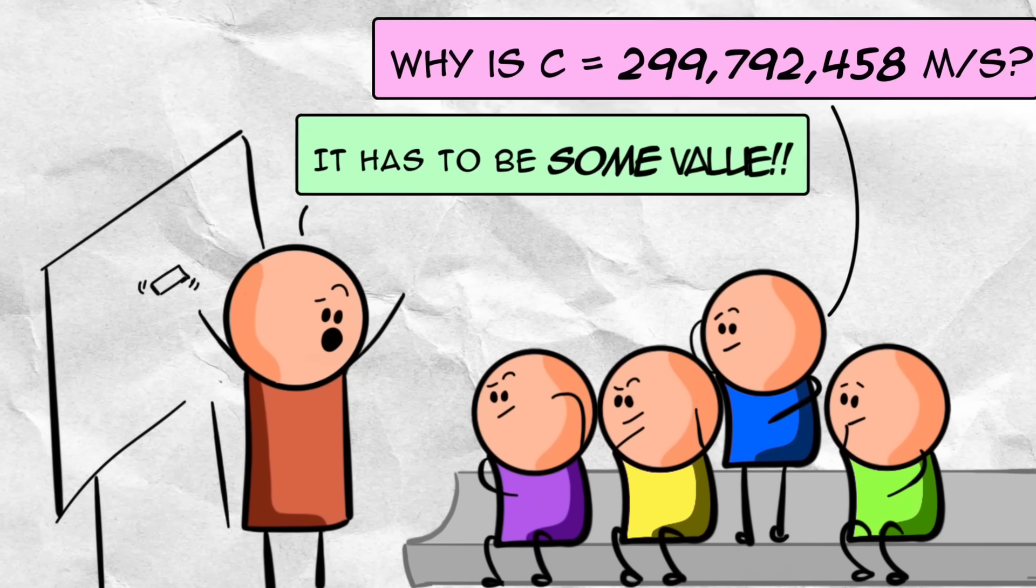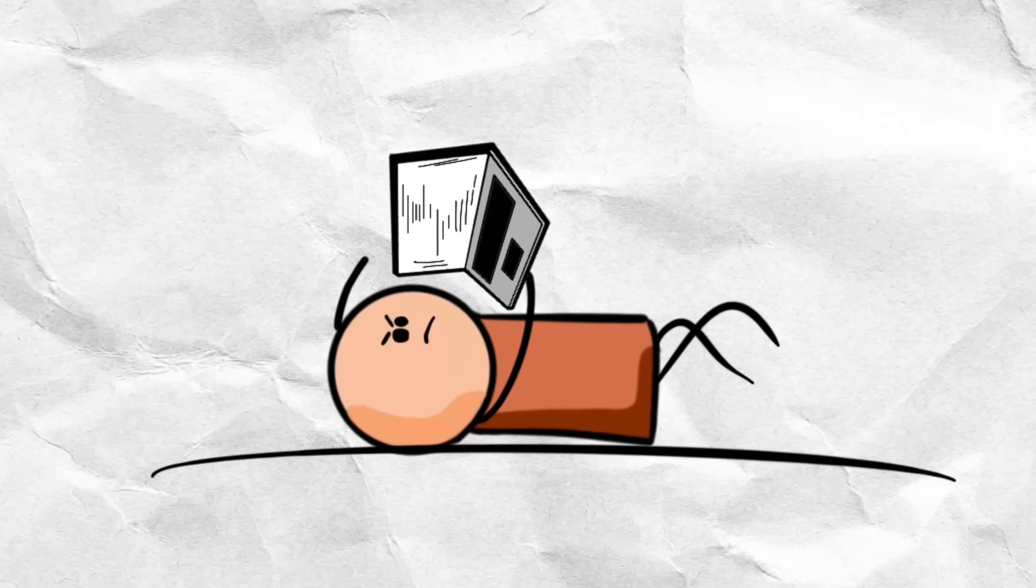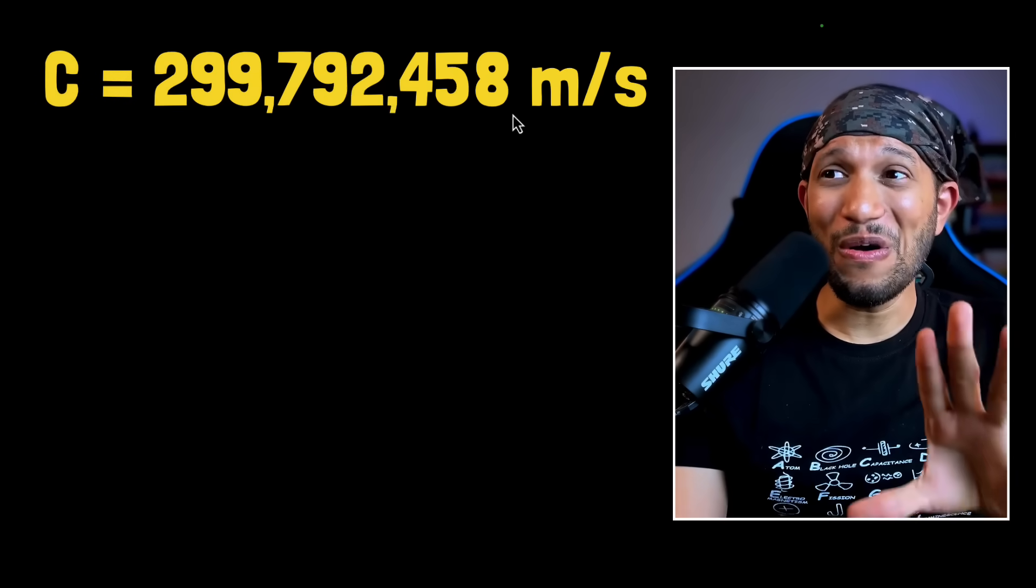And my instinctive answer to that was, well, because it has to be some value, right? We just happen to live in a universe where the speed of light happens to have that particular value in vacuum. But fortunately, that question stuck with me. And therefore, I did a lot of research, and boy, my mind was blown because what I eventually realized is that this number is not random at all.